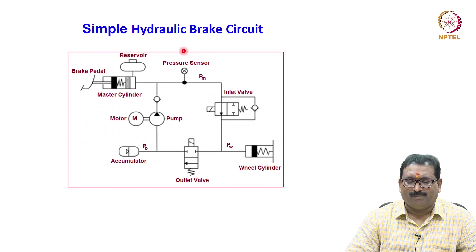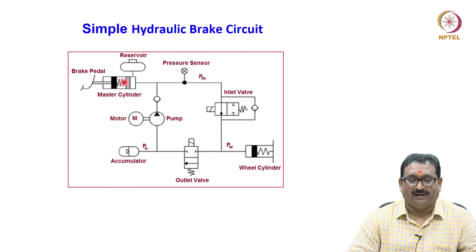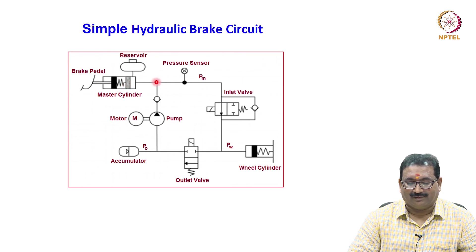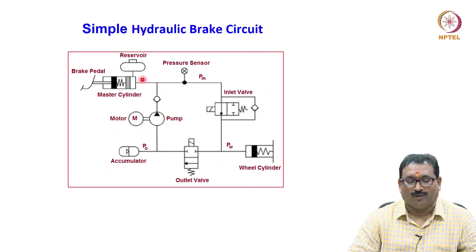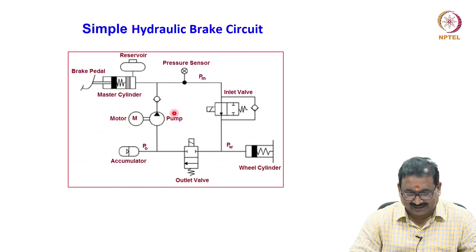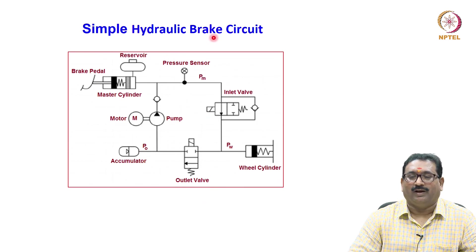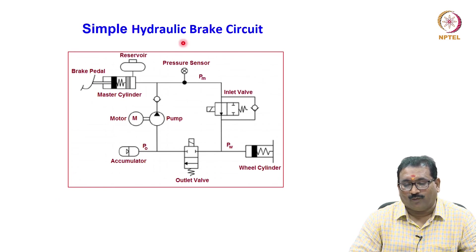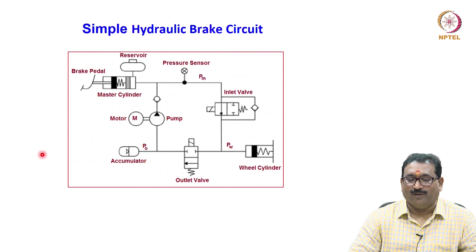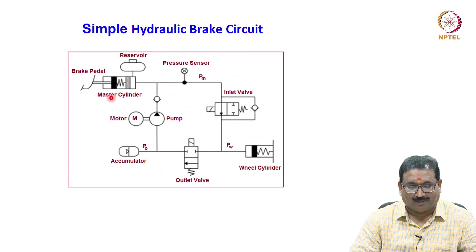The simple schematic diagram of the brake circuit shows the brake pedal connected to the master cylinder. When pushed, fluid comes through a 2/2 solenoid-operated valve and goes to the wheel cylinder. When the brake is released, fluid returns to the reservoir. The circuit also includes a motor and pump, accumulators, and outlet valves. The key point is that the brake pedal is connected to the master cylinder, which is connected to the wheel cylinder through valves.